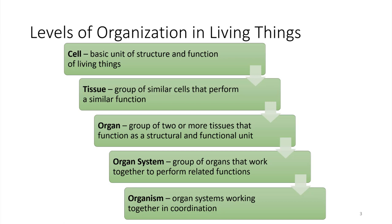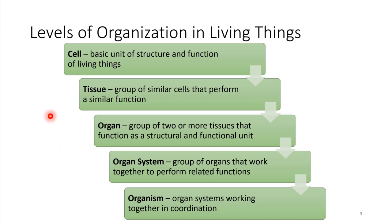Cells can be grouped together to form tissues. Tissues then can group together to form organs that have specialized functions. Organs can work together in systems — we'll be looking at many different organ systems, like the digestive system, as we go throughout this course. And then organ systems work together to form the body of an organism. This is a very characteristic organizational scheme in living things.